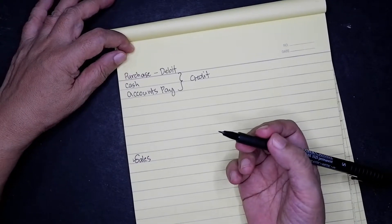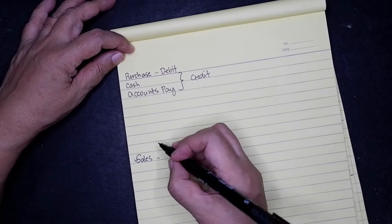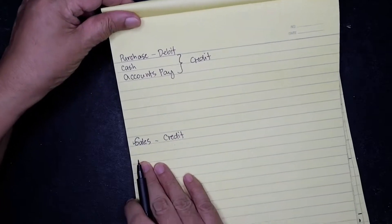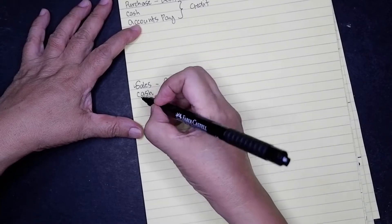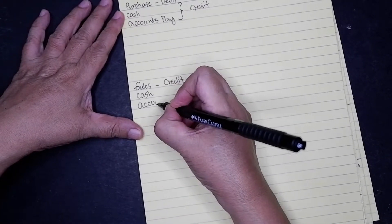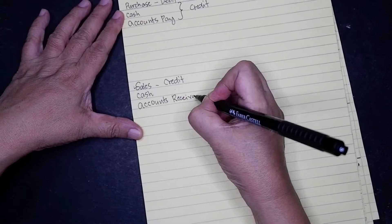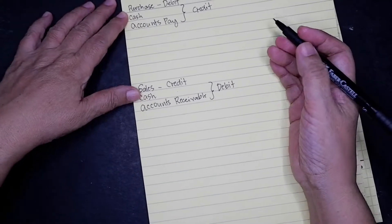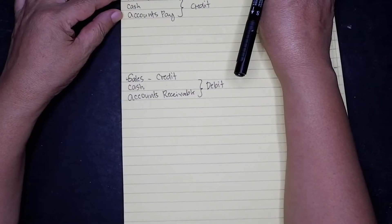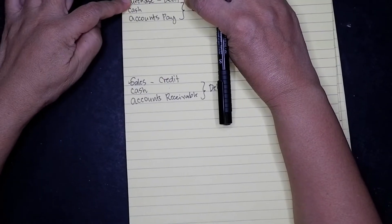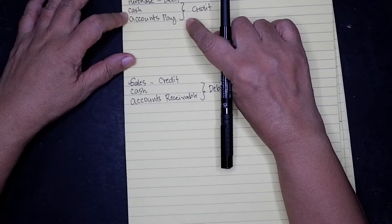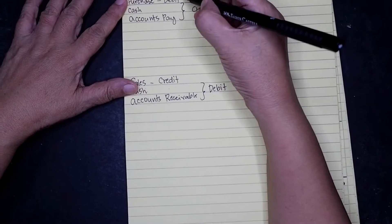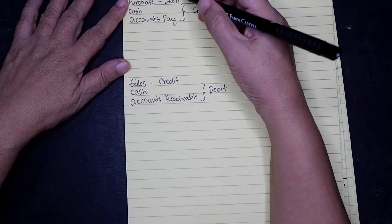For sales, since sales is our revenue account, sales is on the credit side. The debit side will be either cash or accounts receivable. So when we purchase merchandise, our entry is debit purchases, and if we pay at once, credit cash, or if it is on account, credit accounts payable. Take note that purchases is classified as an expense, that is why it is on the debit side, and sales is a revenue, that is why it is on the credit side.